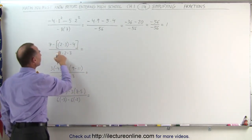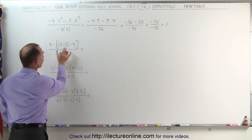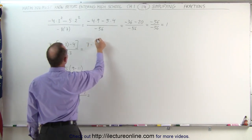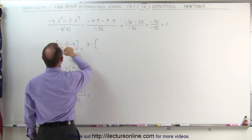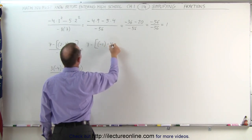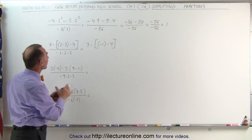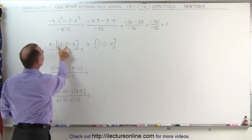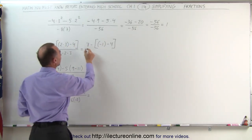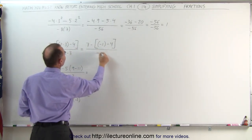In this example, notice we have parentheses and brackets — we need to work those out first. First, the inside parentheses. This becomes 7 minus... 2 minus 3 is minus 1, minus 4. I kept the parentheses there so you can see that 2 minus 3 is indeed minus 1. In the denominator, minus 1, minus 2, minus 3 together is minus 6.